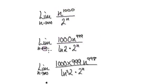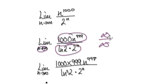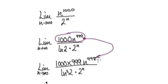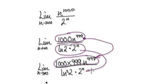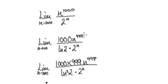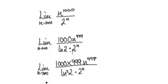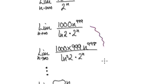Then you try it again. As n tends to infinity, the numerator heads towards infinity and the denominator heads towards infinity — infinity over infinity — so you can differentiate again and apply L'Hôpital's rule again. Notice that each time you differentiate the numerator, the power gets decreased by 1, whereas the denominator still has 2 to the power of n with a constant. Continue differentiating 1,000 times.